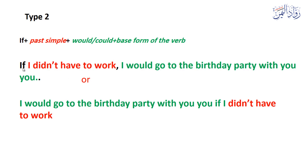Look at this example: 'If I didn't have to work' — this is past simple in the negative form — 'I'd go to the birthday party with you.' Or: 'I'd go to the birthday party with you if I didn't have to work.'